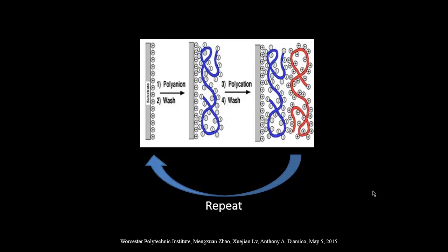This is a sketch of how to synthesize polyelectrolyte multilayers. By alternating depositing polycations and polyanions on the substrate, you can get one bilayer. And by repeating this process, you can get multiple bilayers.